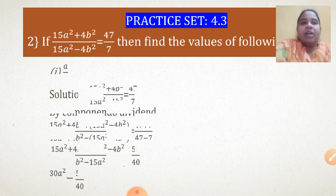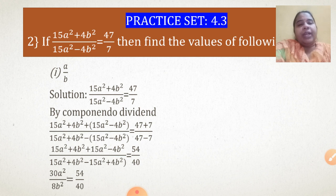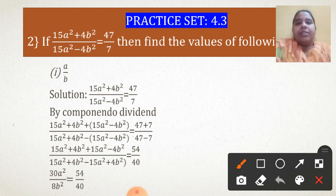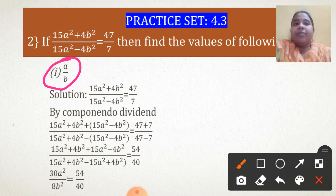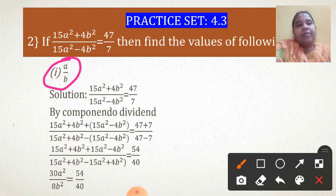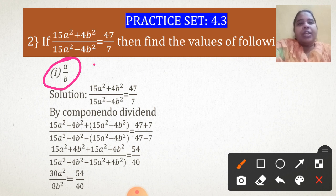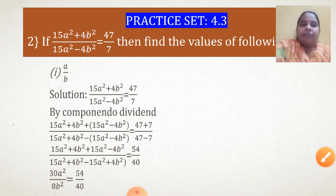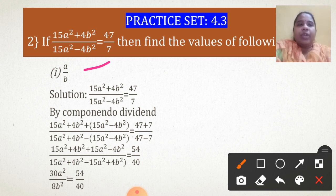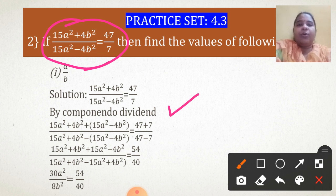This is what is given. The first question is to find A upon B. This is different from the previous sum — there, A upon B was given and different values were asked. In this question they have given us an equation form and are asking us the value of the basic ratio, that is A upon B. The first thing to remember: whenever the basic ratio A upon B is asked, you always have to do Componendo-Dividendo as your first step.